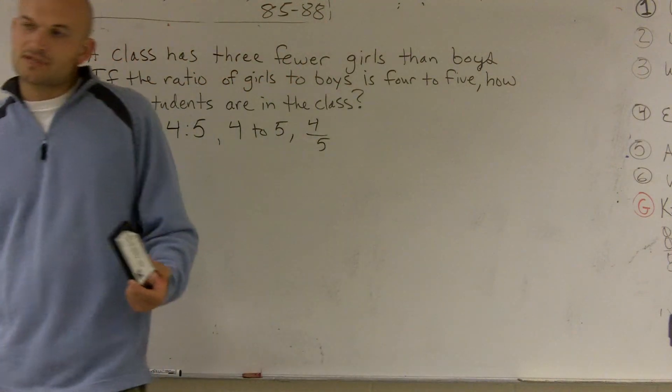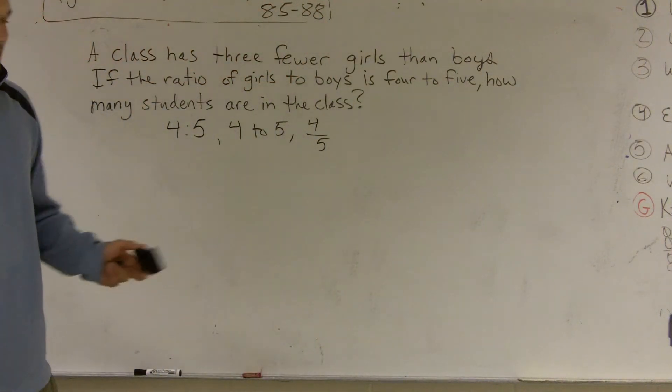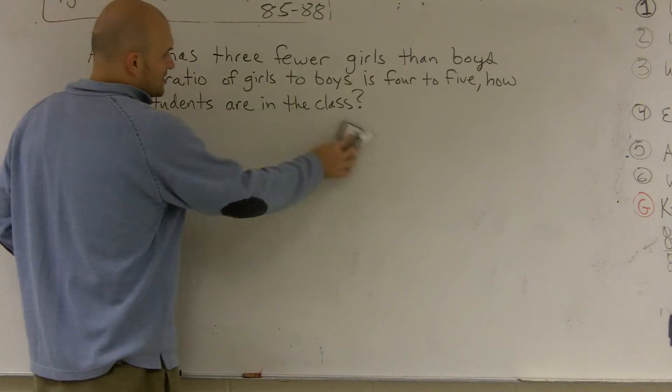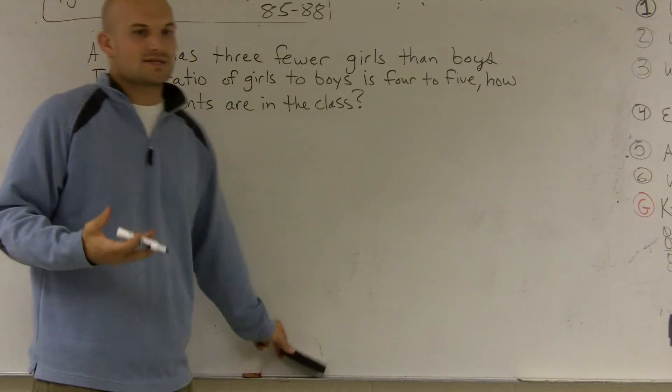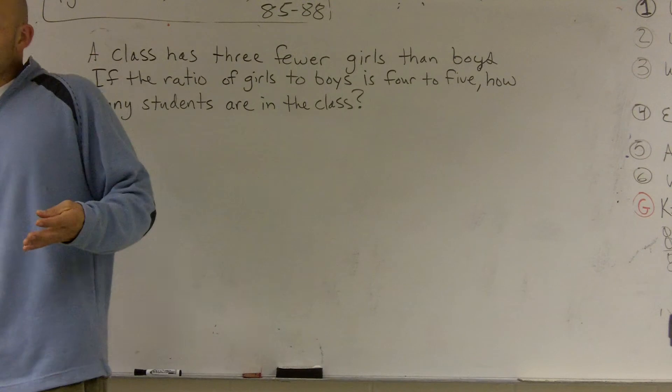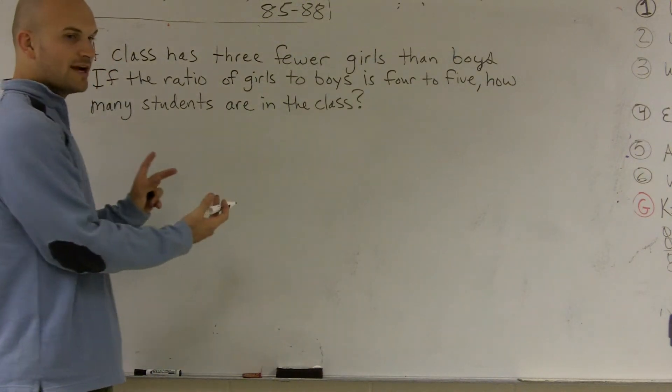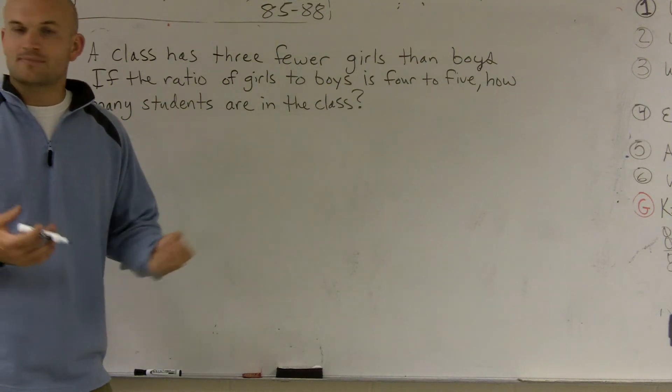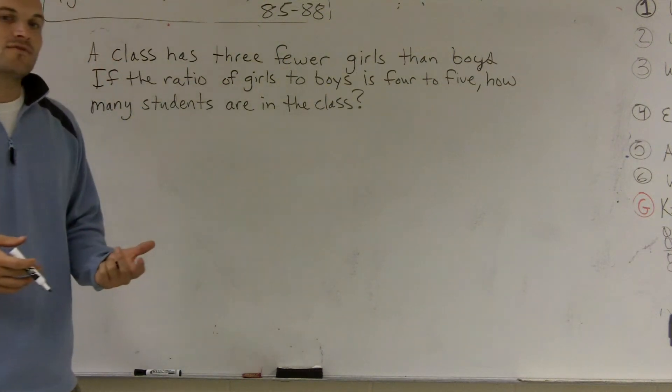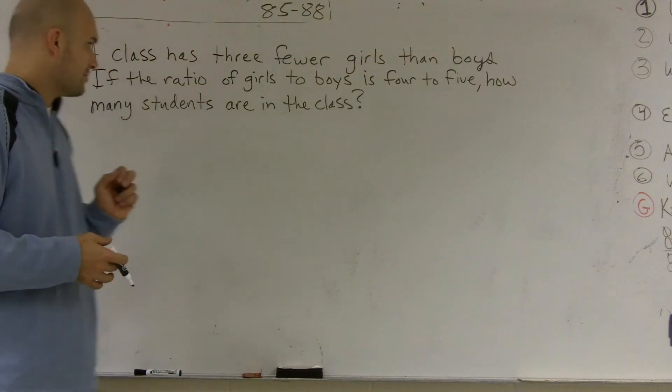And to solve for something, that means we have to have a variable. And to have a variable in solving, we're going to want to have an equal sign. And the only thing we've learned to do with solving when using ratios is to have a proportion, meaning we're going to have one ratio equal to another. And since they're asking us to solve, one of those proportions is going to have a variable.